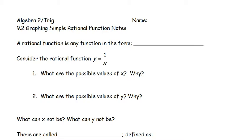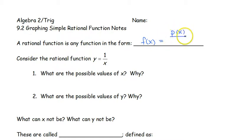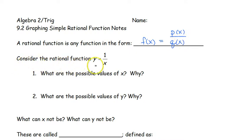First, let's look and see what a rational function actually is. It's any function in the form f of x equals p of x over q of x. We're going to consider the very simple rational function y equals 1 over x.